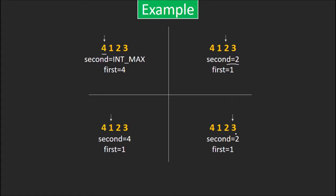Last element is 3 which is not smaller than either of first or second. So, nothing happens. We have traversed the array now and have successfully got first and second smallest elements as 1 and 2 respectively.